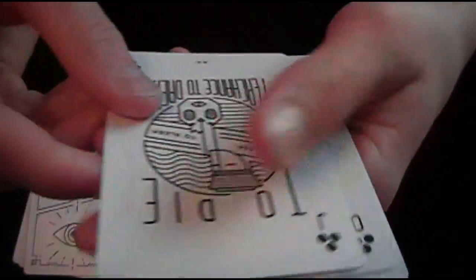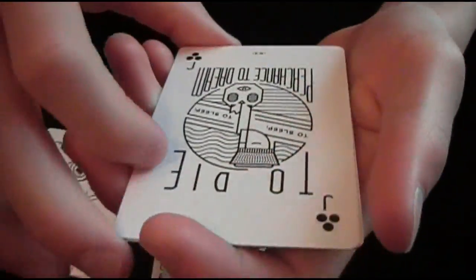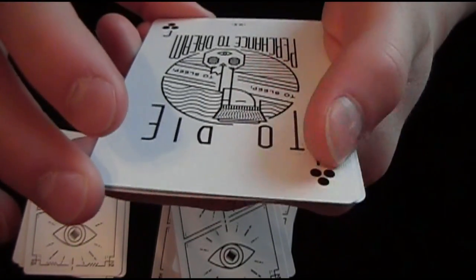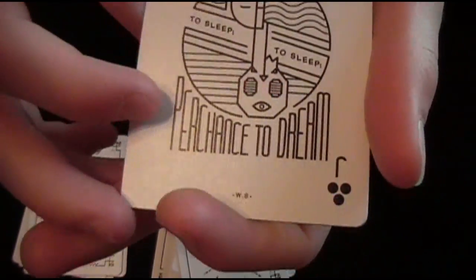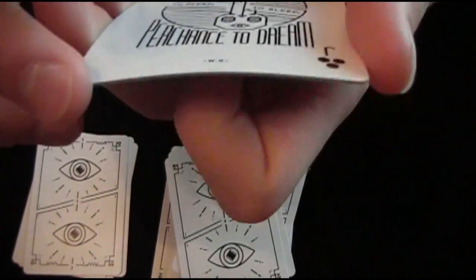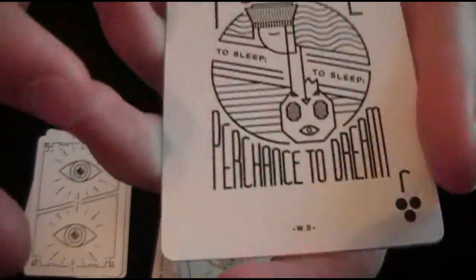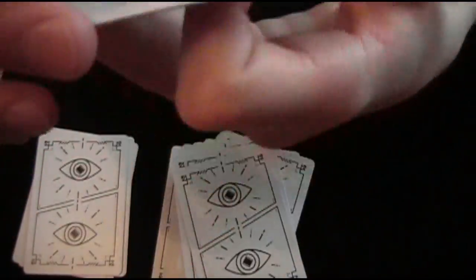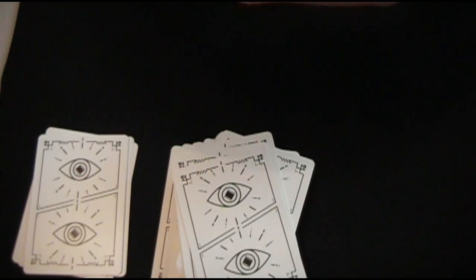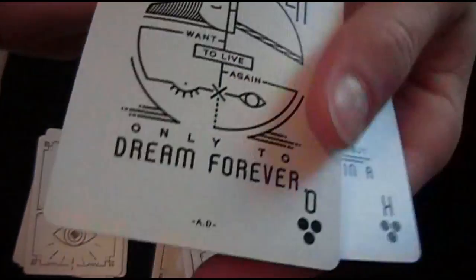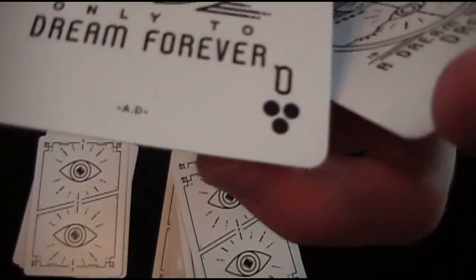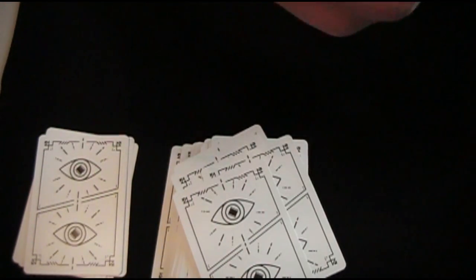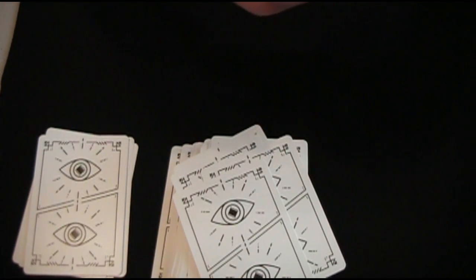And the jack of clubs says, we're now onto the clubs, which is the last suit. It says, To die, to sleep, to sleep. Perchance to dream. And it's using like all this old English. I can't understand it. WS says there. The queen of clubs says, You will never want to live again, only to dream forever. Which is weird. It says AD on the bottom. The king of clubs says, All that we see, or seem, is but a dream, within a dream.